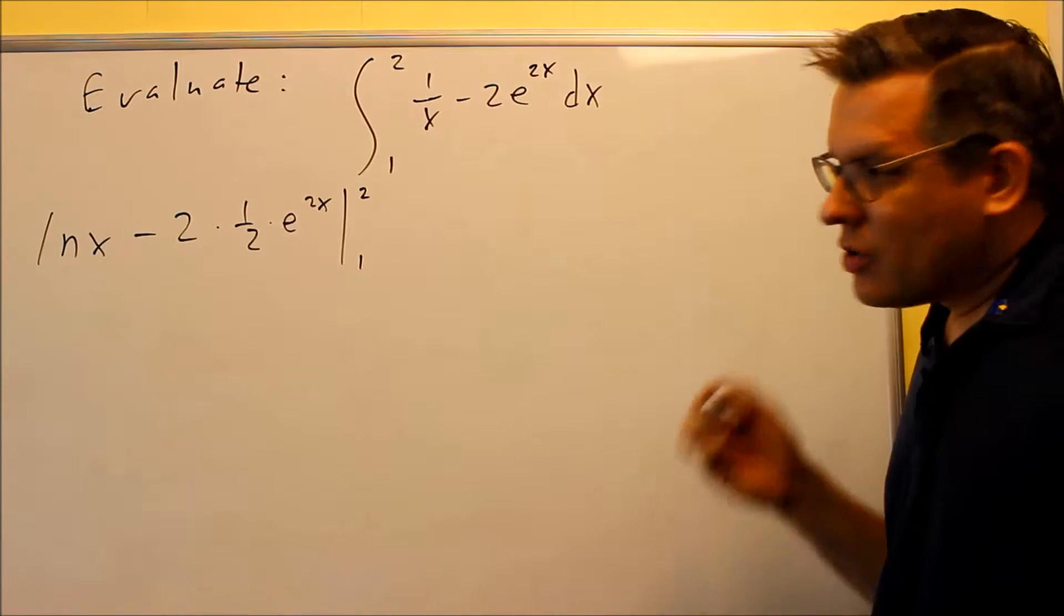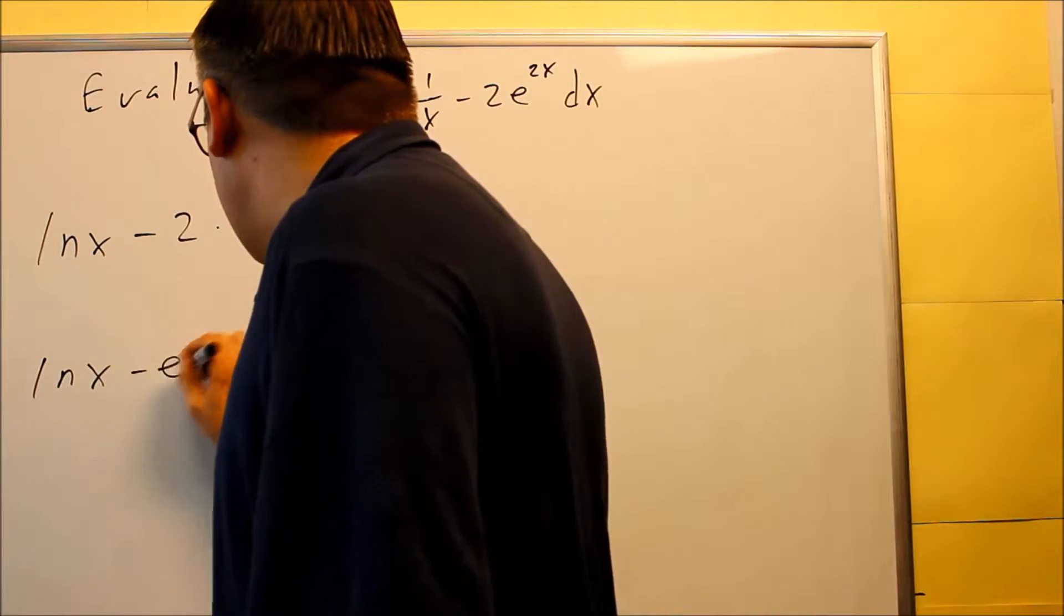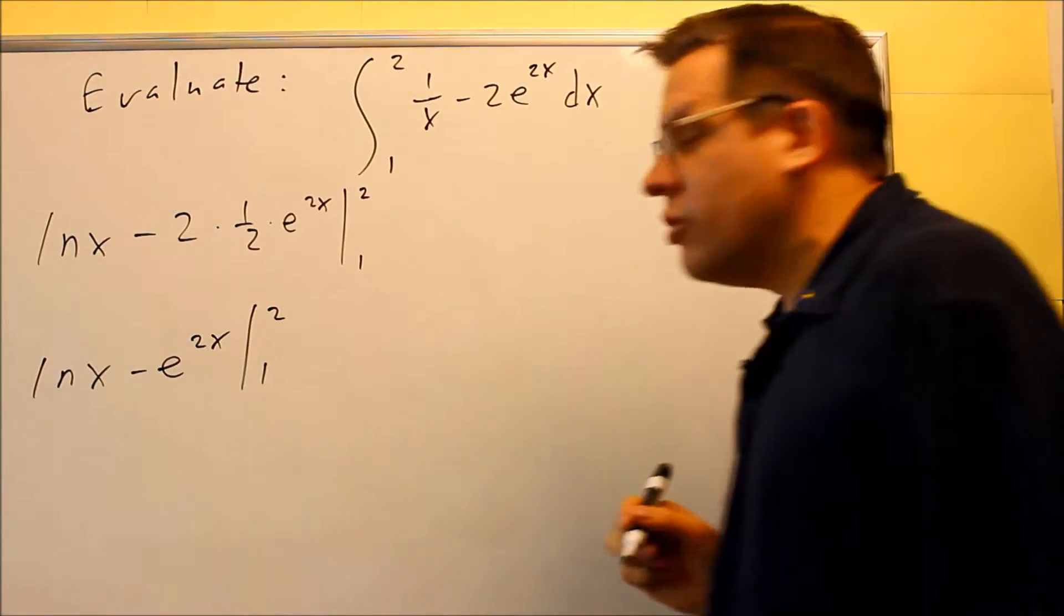It's going to go from 1 to 2. Let's do a simplifying step. Natural log of x minus e to the 2x.